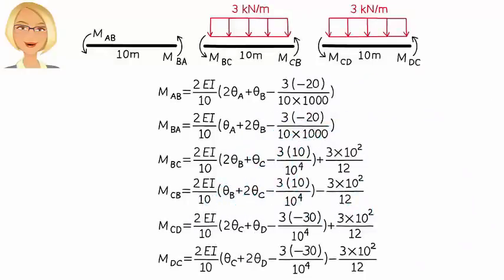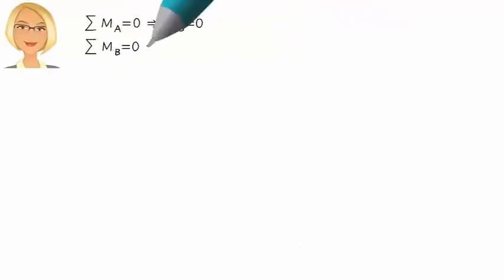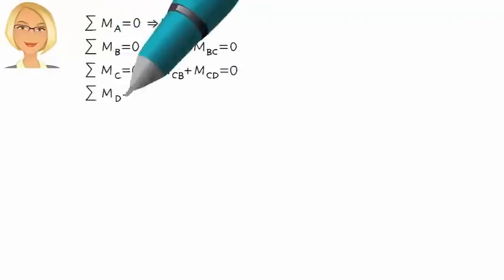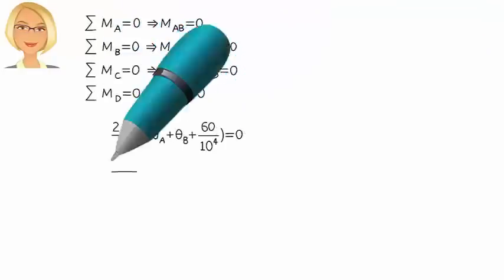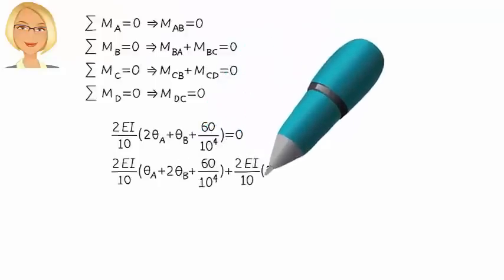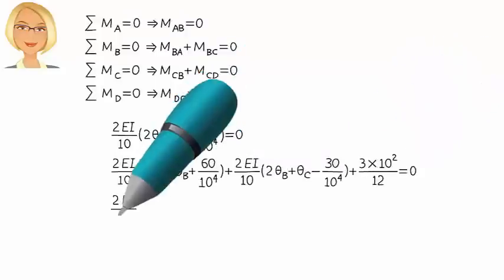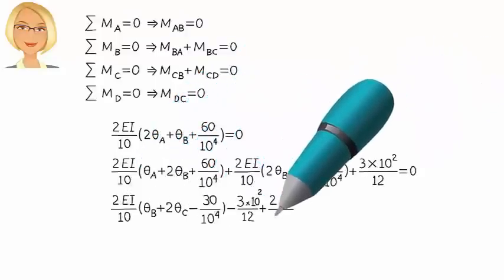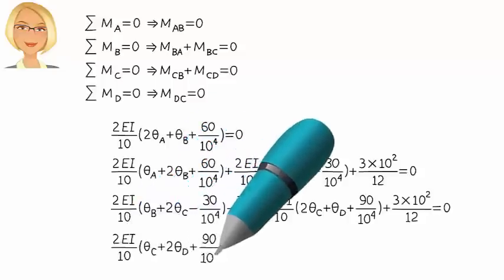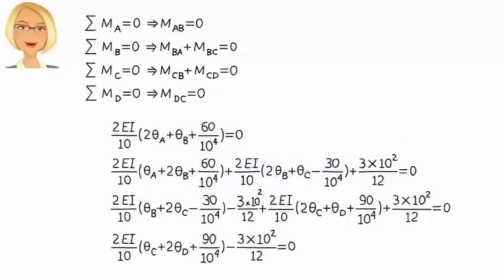Then, the joint equilibrium equations can be written as... Solving these for the unknown joint rotations, we get...